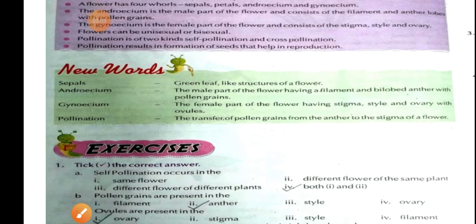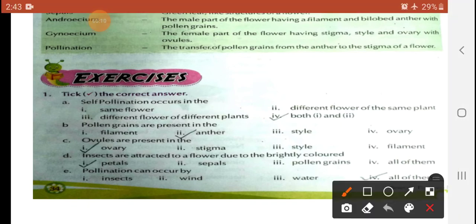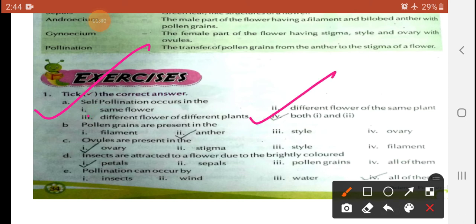Now we will discuss the exercise. Question 1: Tick the correct answer. Sub-part A: Self-pollination occurs in — (a) the same flower, (b) different flower of the same plant, (c) different flower of a different plant, (d) both first and second. The correct answer is: both first and second — meaning the same flower and different flower of the same plant.